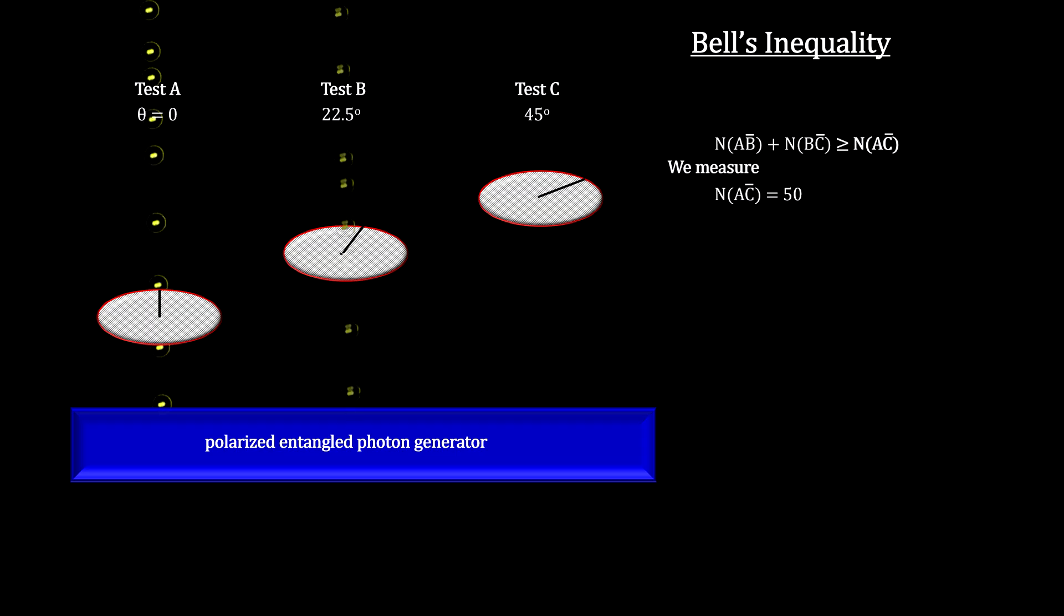The entangled photons then entered lens B, polarized at 22.5 degrees. 85 passed, and 15 were blocked, so the number in A not B was 15.